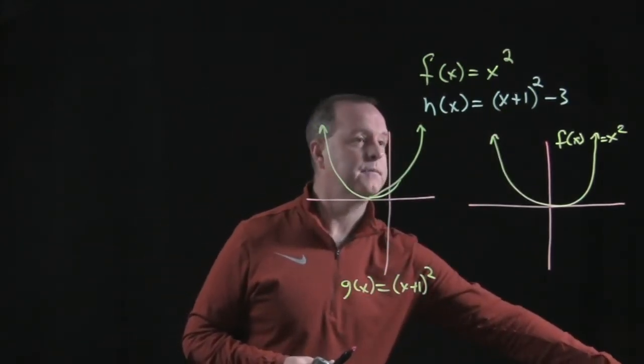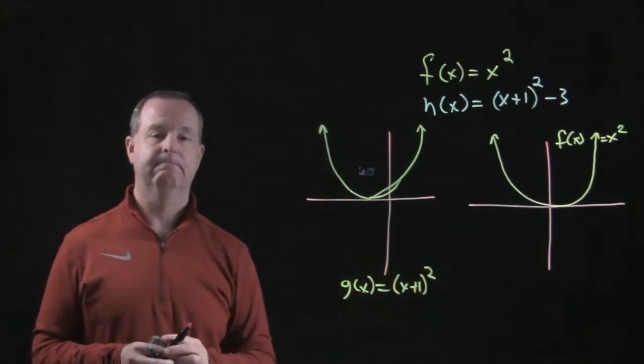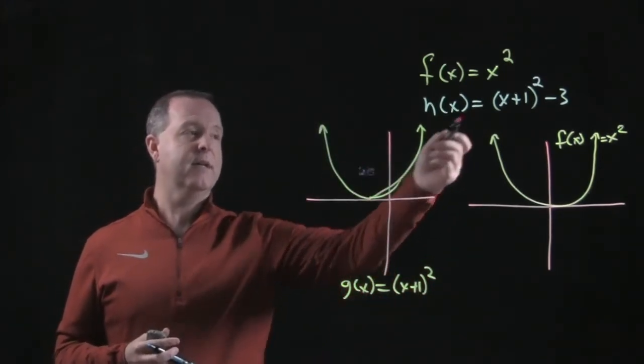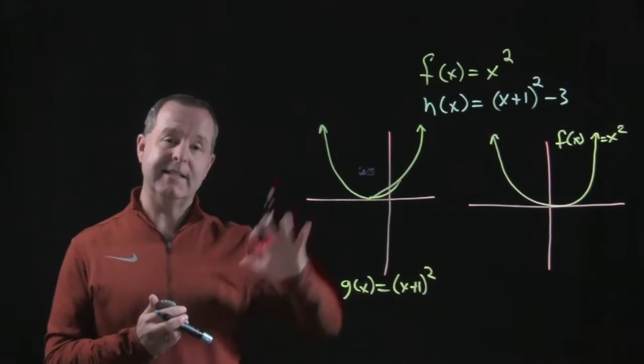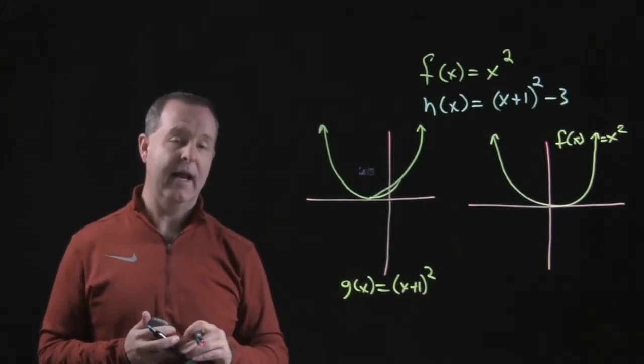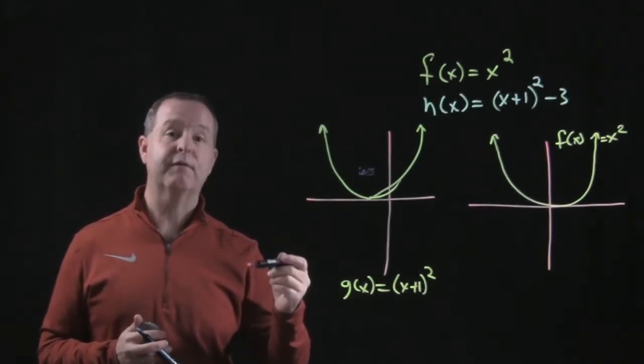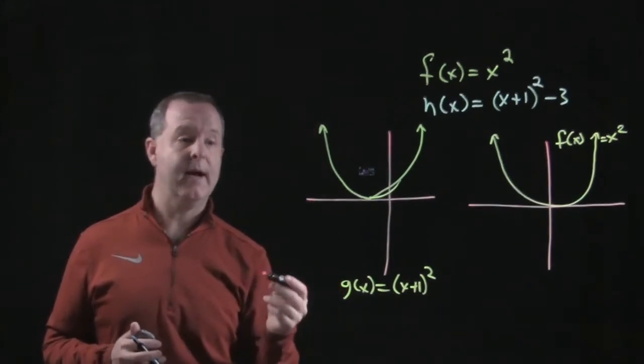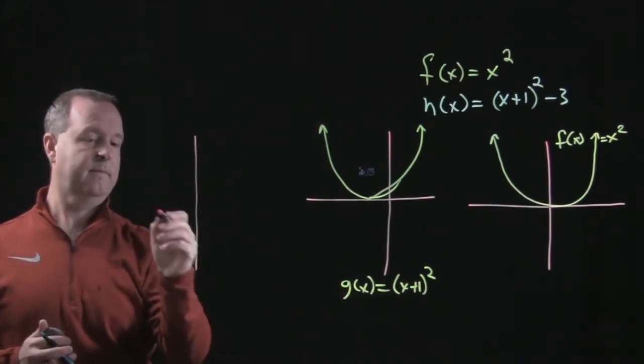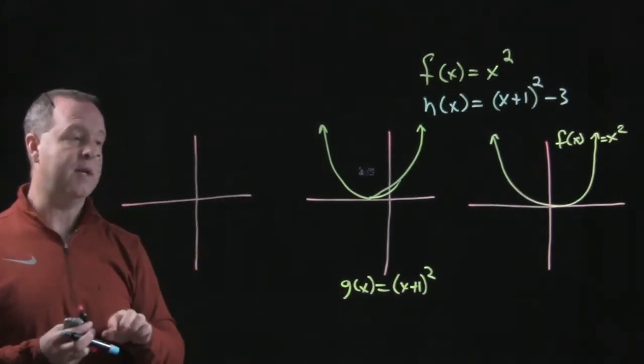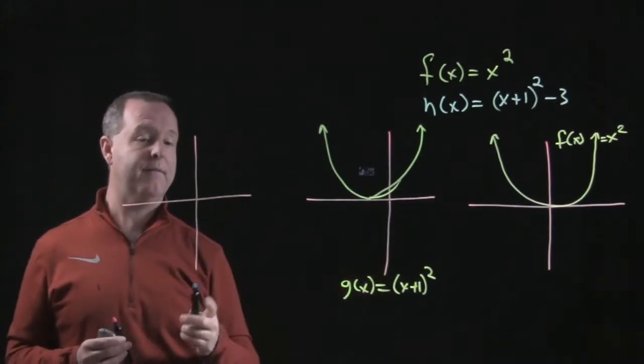And from there, what do you want to do next? Next, we look at the function, and now we see that there's a constant tagged on at the end. And that constant told us it's vertical shifting, up or down. So let's take our previous graph, which we shifted over to the left, one unit.